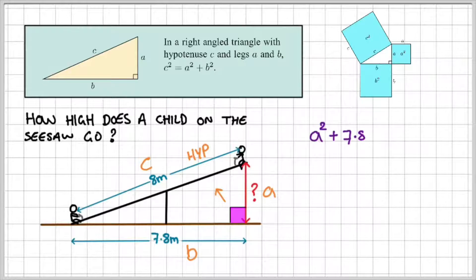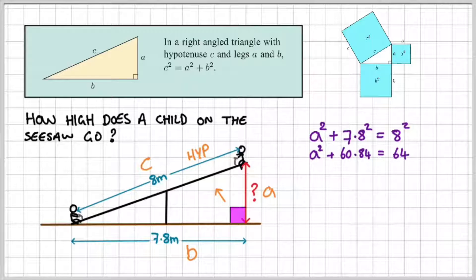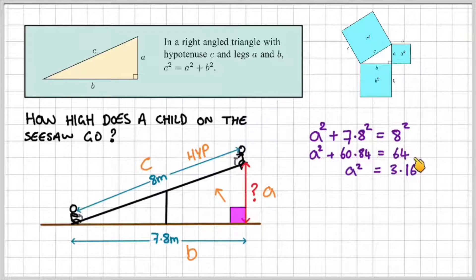So now if I set up the equation, I can say a squared plus 7.8 squared is equal to 8 squared. And if I tidy that up, a squared plus 60.84 is equal to 64. So if I rearrange that, 64 minus 60.84 would give us 3.16.